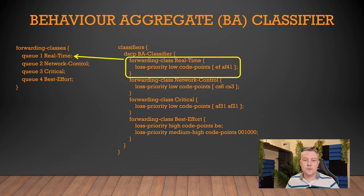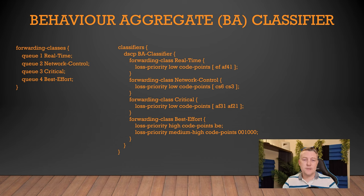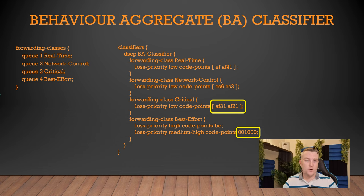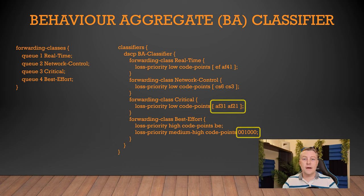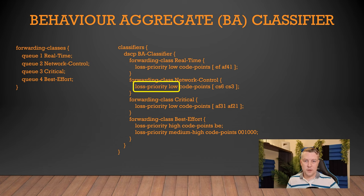The classifiers will map directly to a particular forwarding class. Each forwarding class has one or more loss priorities as well as a code point value. The code point value is the marking in the packet — something like EF for expedited forwarding, AF, or BE — and we can use the name or the binary value. The loss priority is how likely it is for a packet to be dropped during congestion; a higher loss priority means a higher likelihood of being dropped.